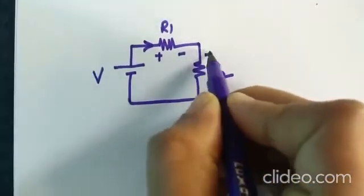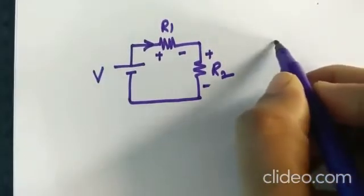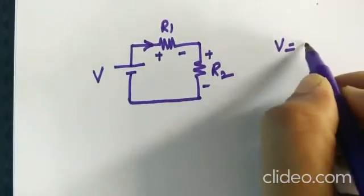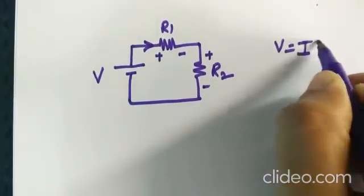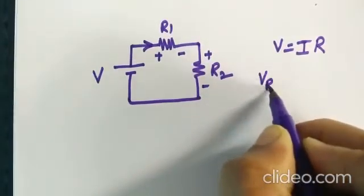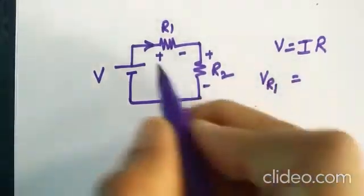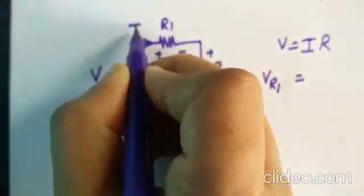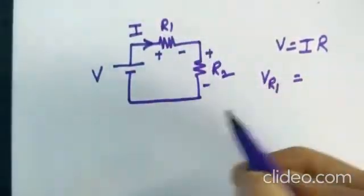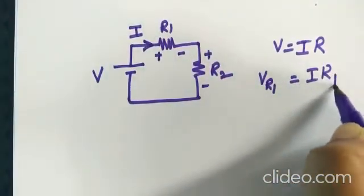So current always flows from higher to lower potential like this. And we all know what is Ohm's law formula: V equal to IR is the formula. Now voltage drop across R1 is equal to, according to this formula, the current that is flowing through the circuit, let us assume that as I itself. So I into R1.